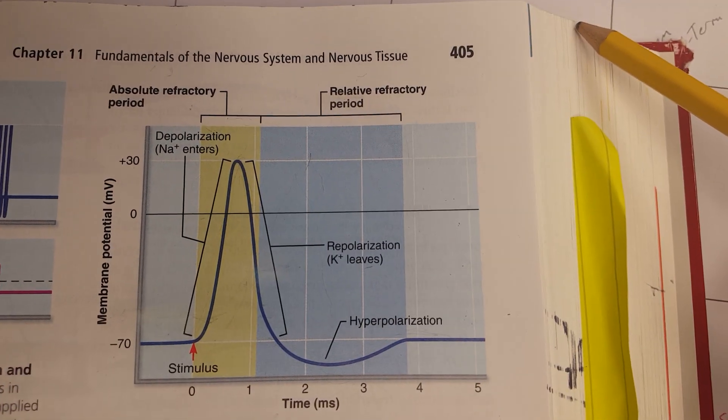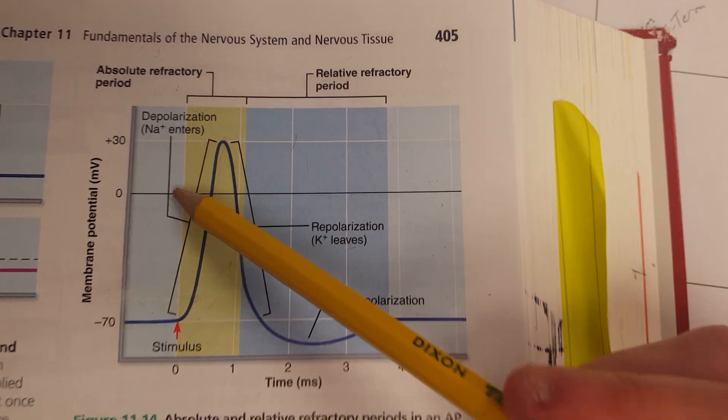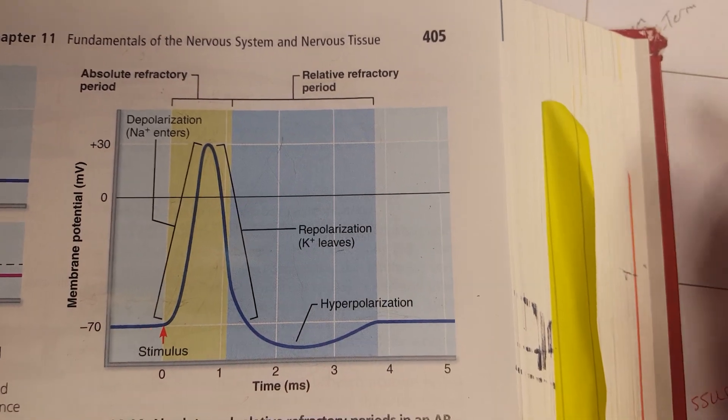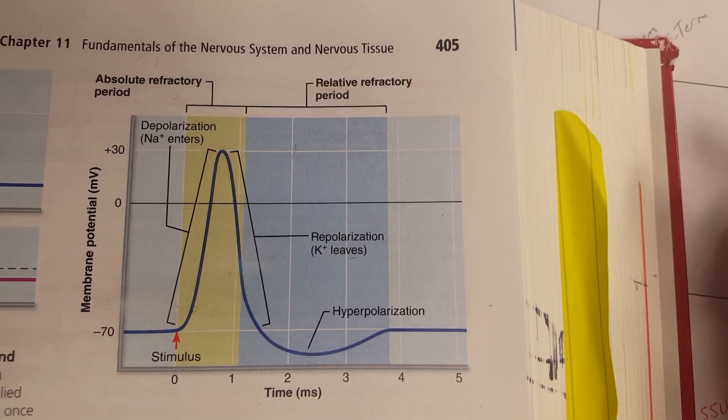So relative to the strength of the stimulus during the relative refractory period, we could potentially elicit a second action potential. During the absolute refractory period, absolutely no way will we get that action potential.